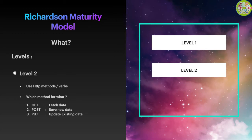If you call the PUT method with the same input 10 times, then the same record will be updated 10 times. Due to this behavior, PUT is called idempotent. The fourth method is DELETE, which is used to delete the record.